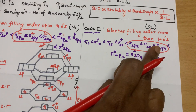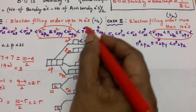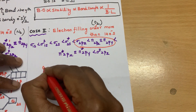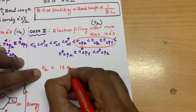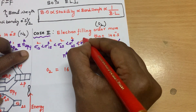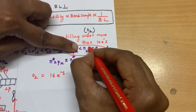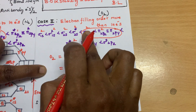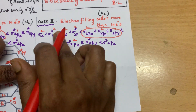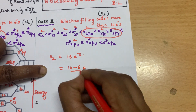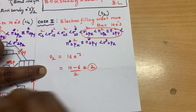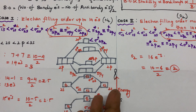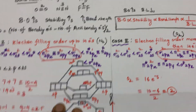You may ask: N2⁻ has 15 electrons, shouldn't we follow a different rule? But since the species is derived from nitrogen, we follow the nitrogen sequence. For oxygen: 8 plus 8 equals 16 electrons. Filling gives 10 bonding and 6 anti-bonding: 10 minus 6 divided by 2 equals 2. So the bond order of O2 is 2.